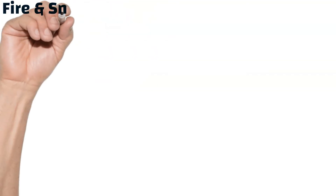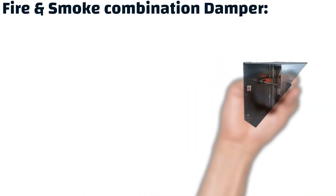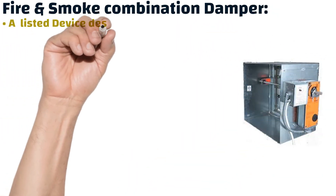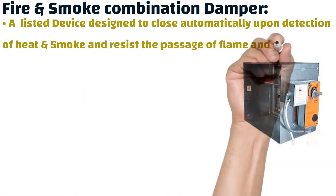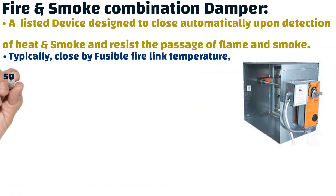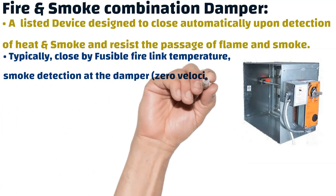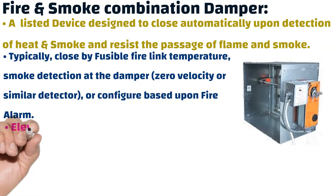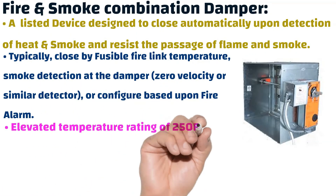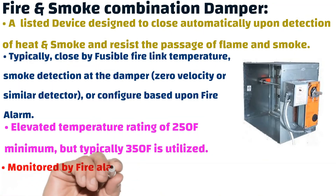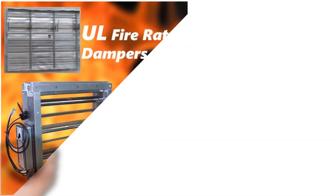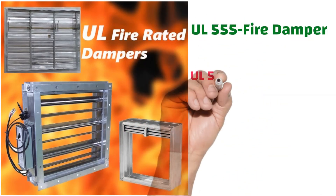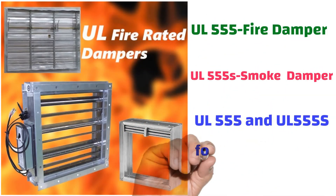What is a fire and smoke combination damper? It is a listed device designed to close automatically upon detection of heat and smoke and resist the passage of flame and smoke. It is typically closed by a fusible fire link temperature or smoke detection at the damper, configured based upon fire alarm, and monitored by fire alarm for open and closed position — closed position only for smoke control, and non-smoke control as well.